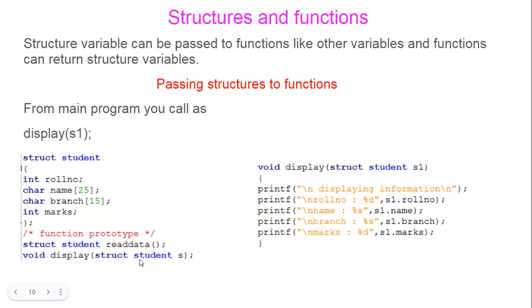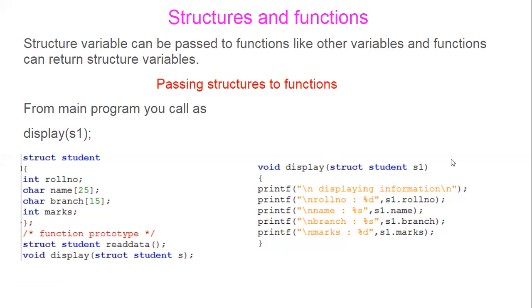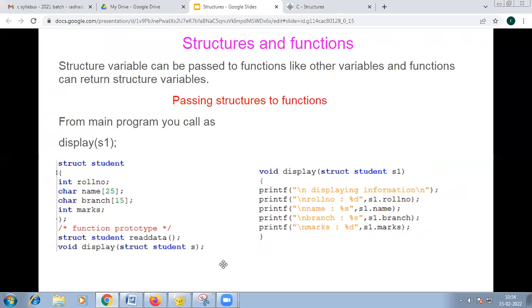The argument is of type struct student, which we have already declared. So you write the function prototype first, then write the main program, and after completing the main program you write your function. This function is defined as void display with struct student as the parameter. Whatever is stored in S1 will also be in S, since both refer to the same structure data. It is a structure parameter of type struct student, and it is used for displaying the information.